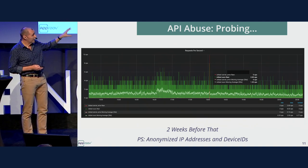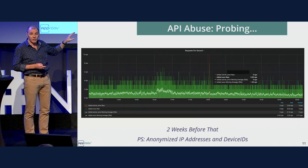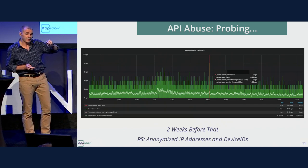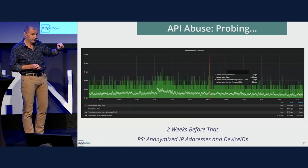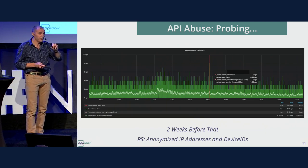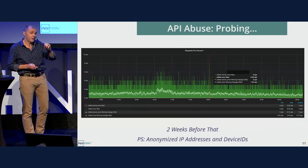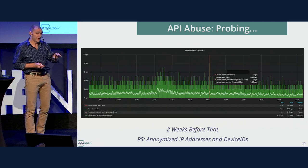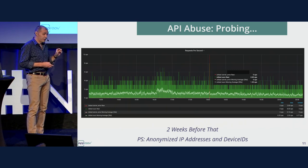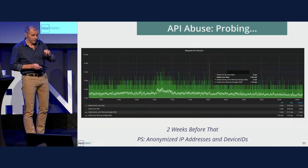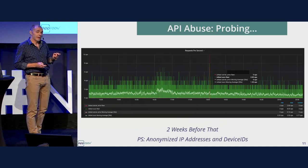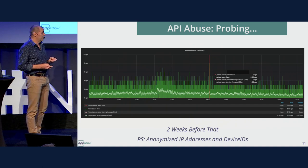One important thing to mention is that all the IP address and device ID information is anonymized. We can tell that we've seen an IP address or device ID before, but we don't know what it is. That's very important from a GDPR point of view — you don't want to be collecting that kind of information.